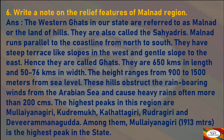The Malnad has steep terrace-like slopes in the west and gentle slopes to the east, hence they are called Ghats. They are 650 kilometers in length and 50 to 76 kilometers in width. The height ranges from 900 to 1,500 meters from sea level. These hills obstruct the rain-bearing winds from the Arabian Sea and cause heavy rains, often more than 200 centimeters. The highest peaks in this region are Mulianagiri, Kudremukh, Kalhattigiri, Rudragiri, and Deviramane Gudda. Among them, Mulianagiri is the highest peak in the state at 1,930 meters high.